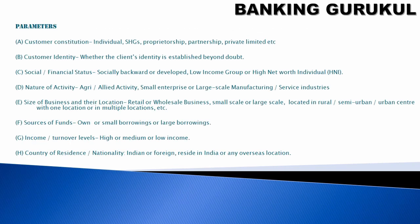The parameters include: first, customer constitution — whether the customer is an individual, a proprietorship, partnership, or private limited company. Second, whether the client's identity is established beyond doubt when verifying ID or address proof. Third, whether the customer belongs to a low or high income group. Fourth, nature of activity — agriculture, small enterprises, service industries, or manufacturing. Fifth, whether it's retail or wholesale, small or large scale, and whether the business is in a rural, semi-urban, or urban location.